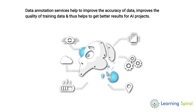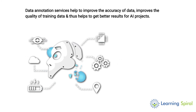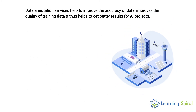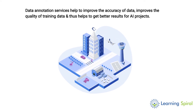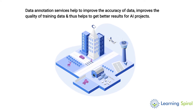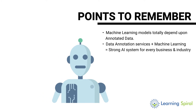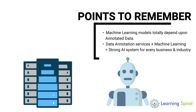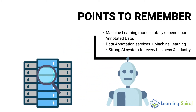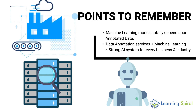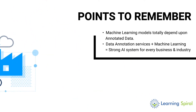Data annotation services help to improve the accuracy of data, improve the quality of training data, and thus help to get better results for AI projects. Machine learning models totally depend upon annotated data. Data annotation services plus machine learning build a strong AI system for every business and industry.